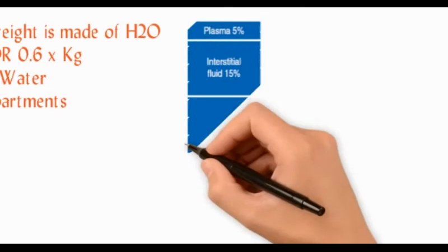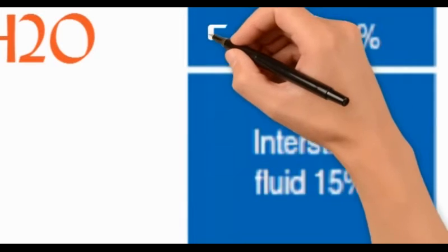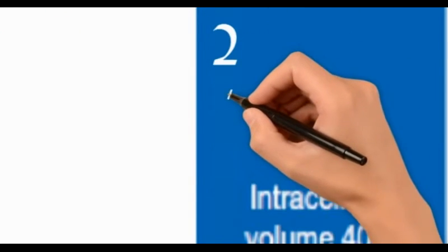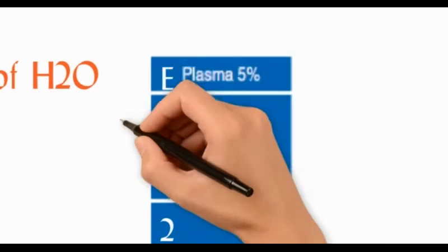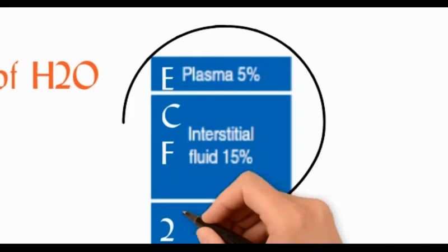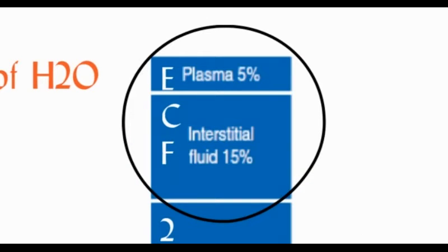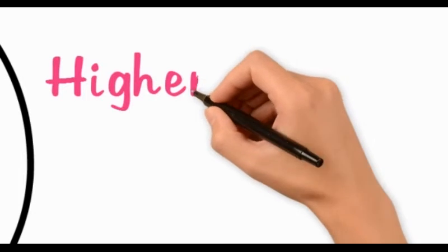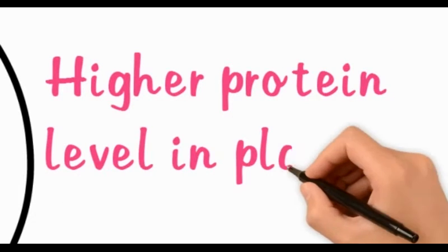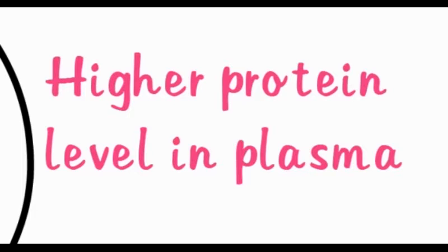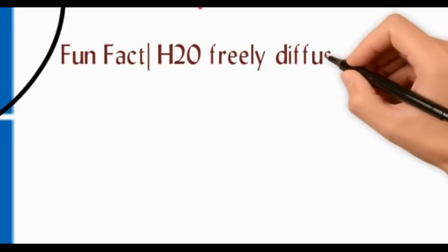The extracellular fluid is one-third of the total body water and the intracellular fluid is two-thirds. In the extracellular fluid, 25% is plasma and 75% is interstitial fluid. Both have the same composition except that plasma has a high level of proteins. Because water can freely diffuse across compartments,